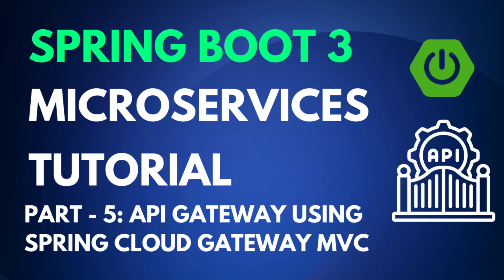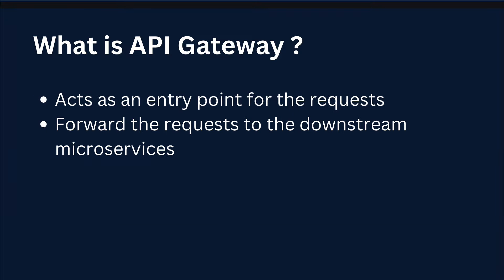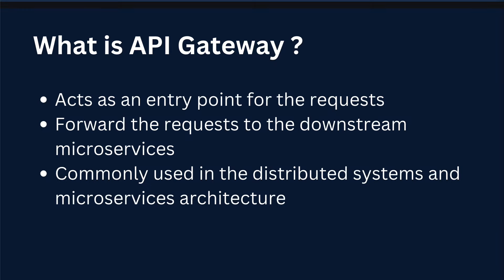In this video we will learn about the API Gateway pattern and how to integrate it in our Spring Boot microservices project. We'll be using Spring Cloud Gateway MVC as the API gateway library. An API gateway acts as an entry point for all the requests into our system, and we can forward incoming requests to downstream microservices using it. It is a very commonly used component inside distributed systems and microservices architecture.